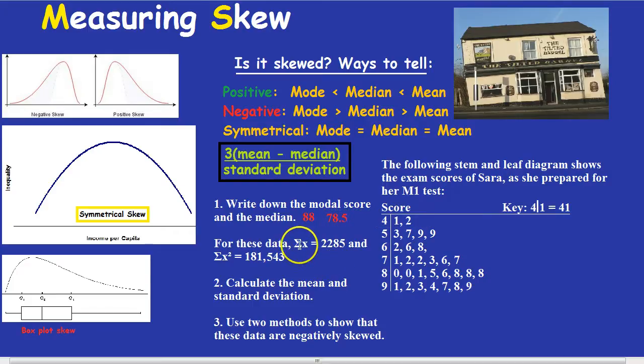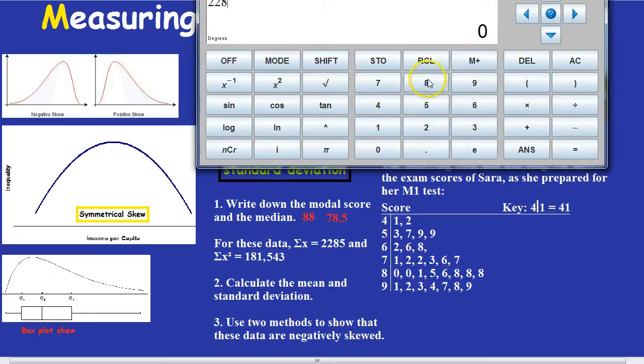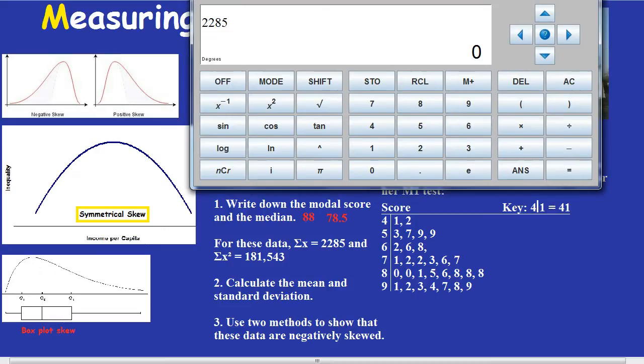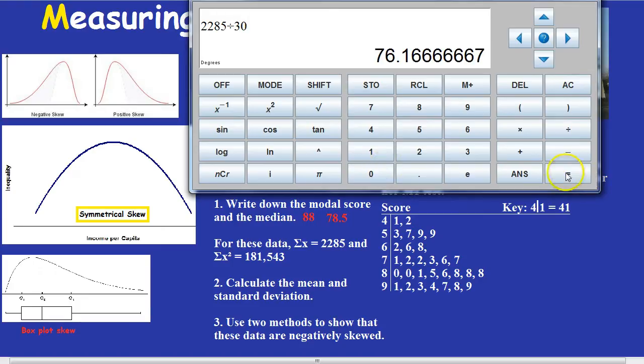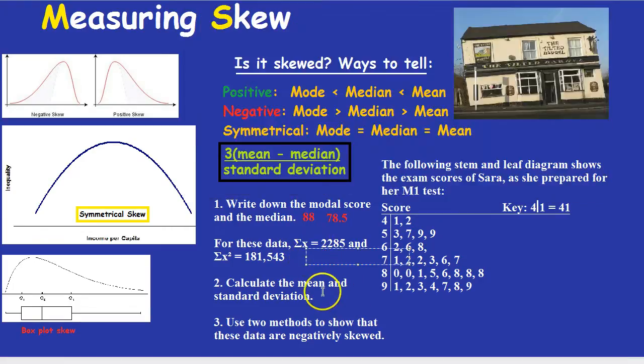Now it says, for these data, the sum of x is 2,285, and the sum of x squared is this number. Calculate the mean and standard deviation. Well, mean, I think you know how to do that. You simply add them all up and divide by how many there are. Well, thankfully, they've added them up for us. The sum of x, they say, is this. So we simply need to divide that by how many people there were, or how many results there were, which was 30. So the mean is 76.2.